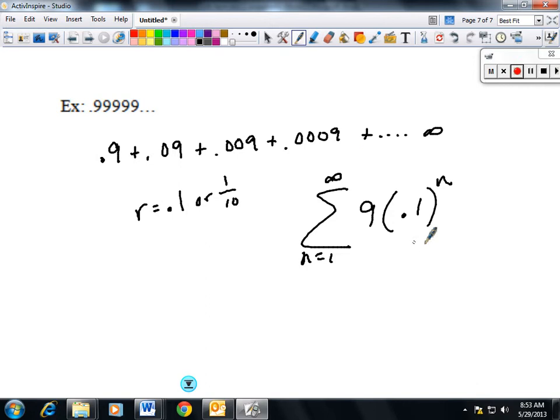And that actually converges. r is less than 1, so it's going to converge to my first term. If I fill in a 1, I have my 0.9 over 1 minus my common ratio, which is 0.1. And that actually converges to 1, which should make sense. Because this, no matter how many zeros you get, it eventually does go to 1.